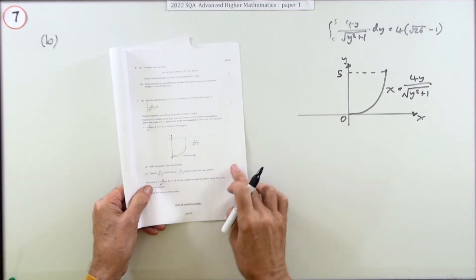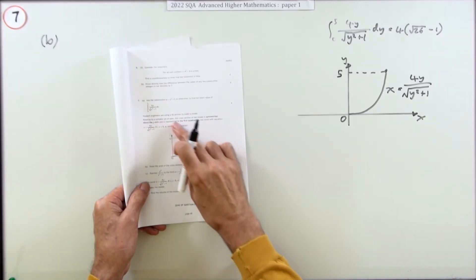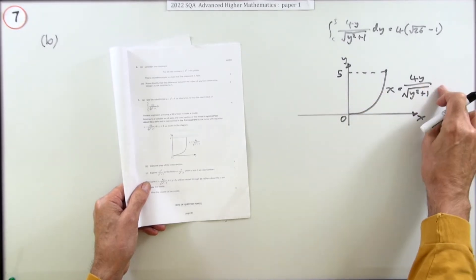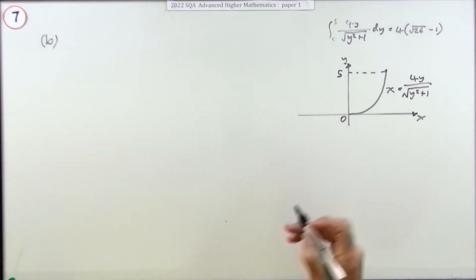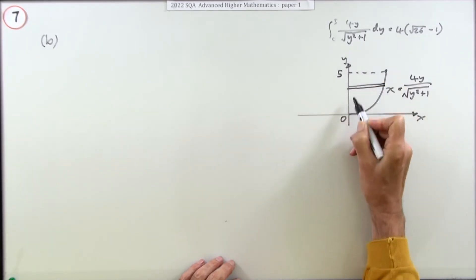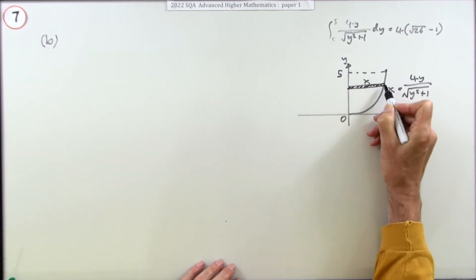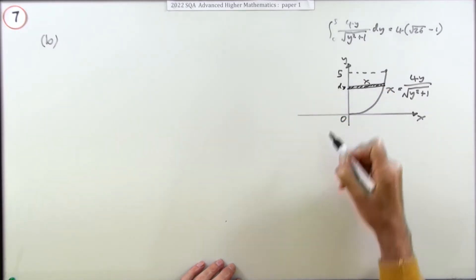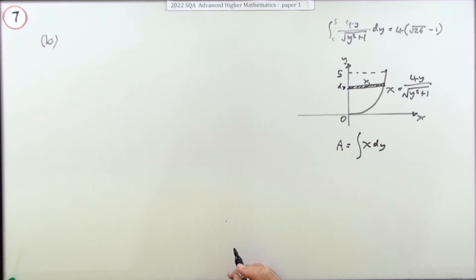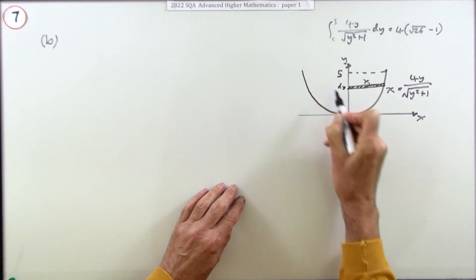Part (b): state the area of the cross section, for one mark. The question sets up that the cross section is symmetrical about the y-axis, represented in the first quadrant by the given curve. To find the area with respect to the y-axis, you sum small rectangles of length x and thickness dy from 0 to 5. But since it's symmetrical, there's also a matching part on the other side.